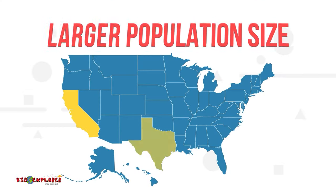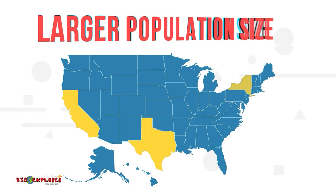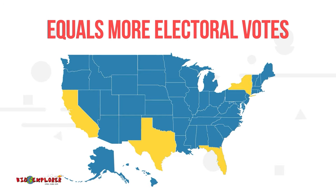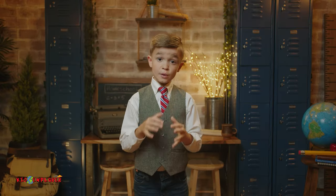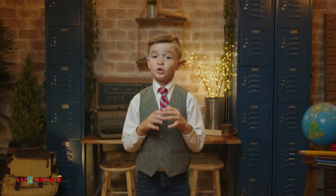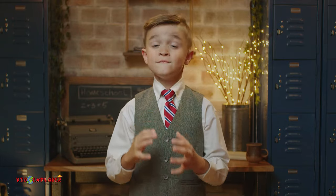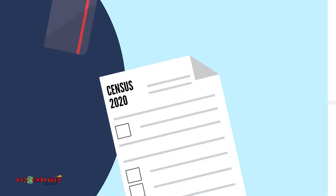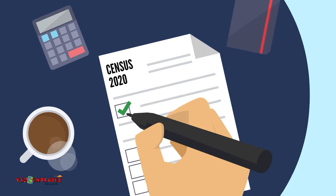That's why California, Texas, New York, and Florida have so many electors — because there are so many more people who live in those states, so they have more House representative members.